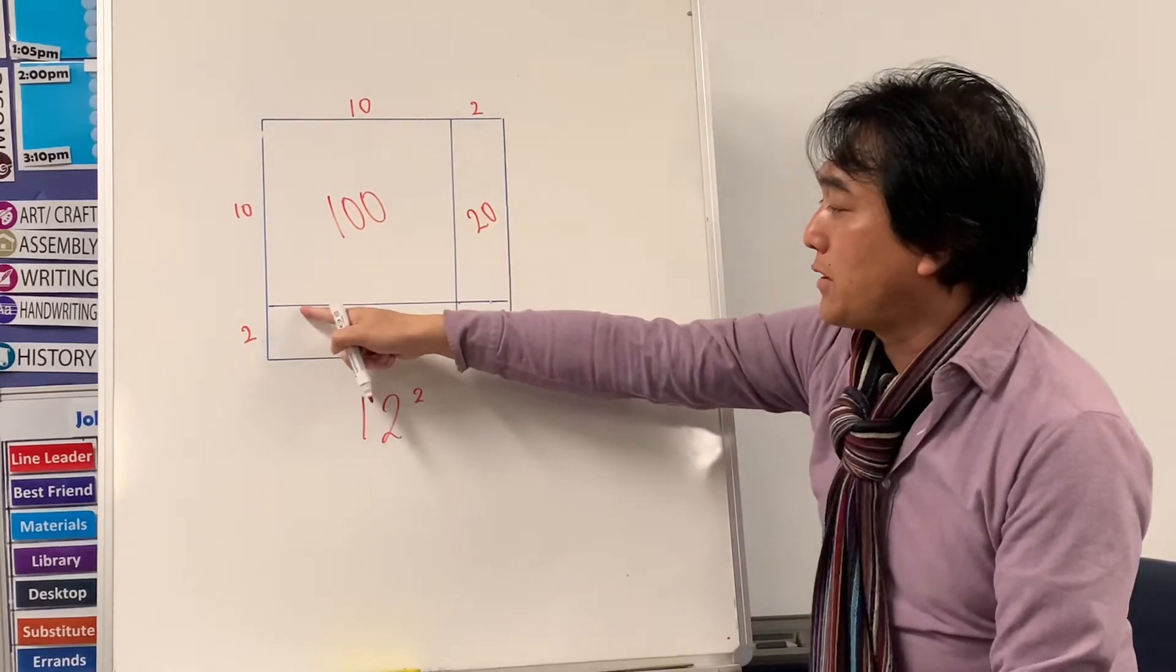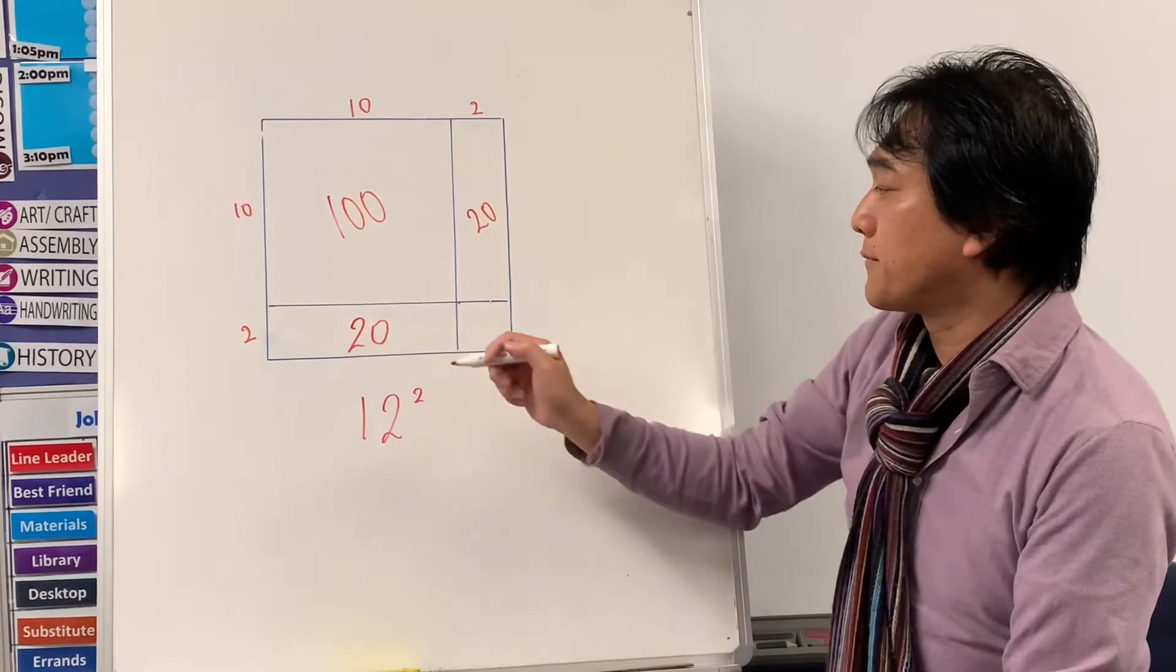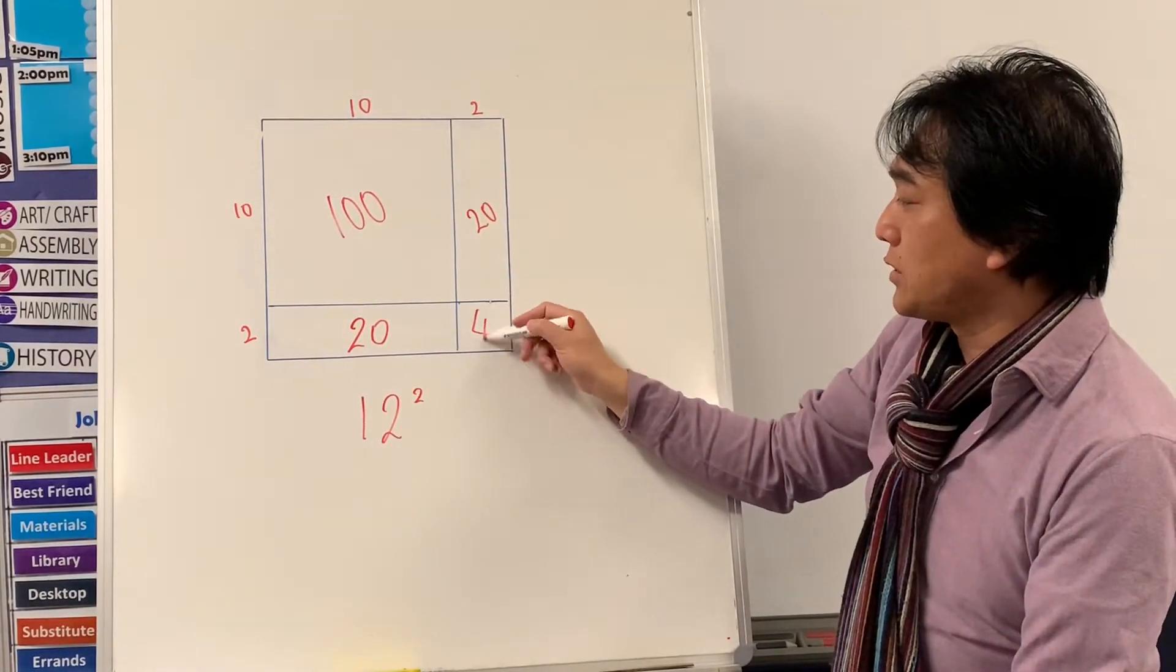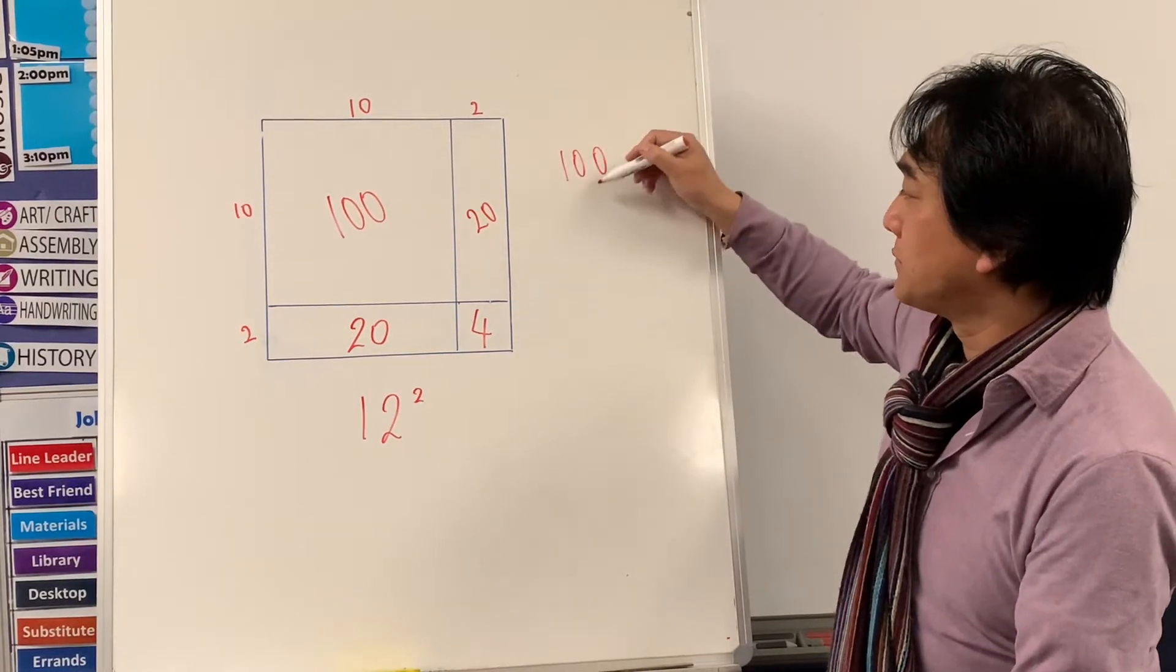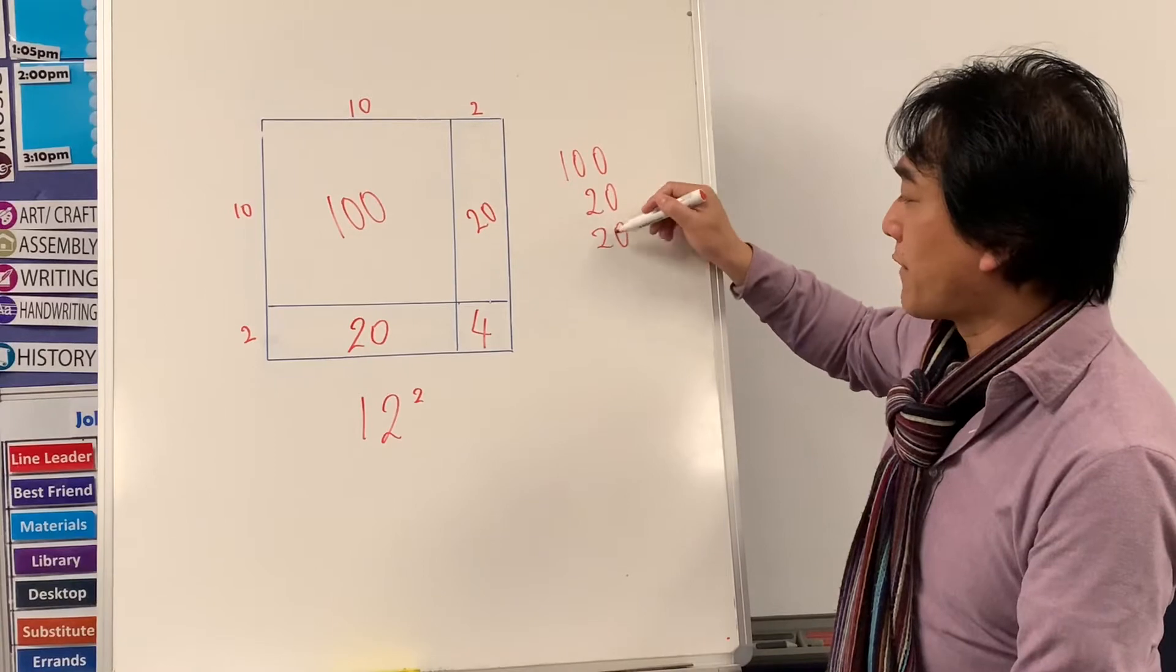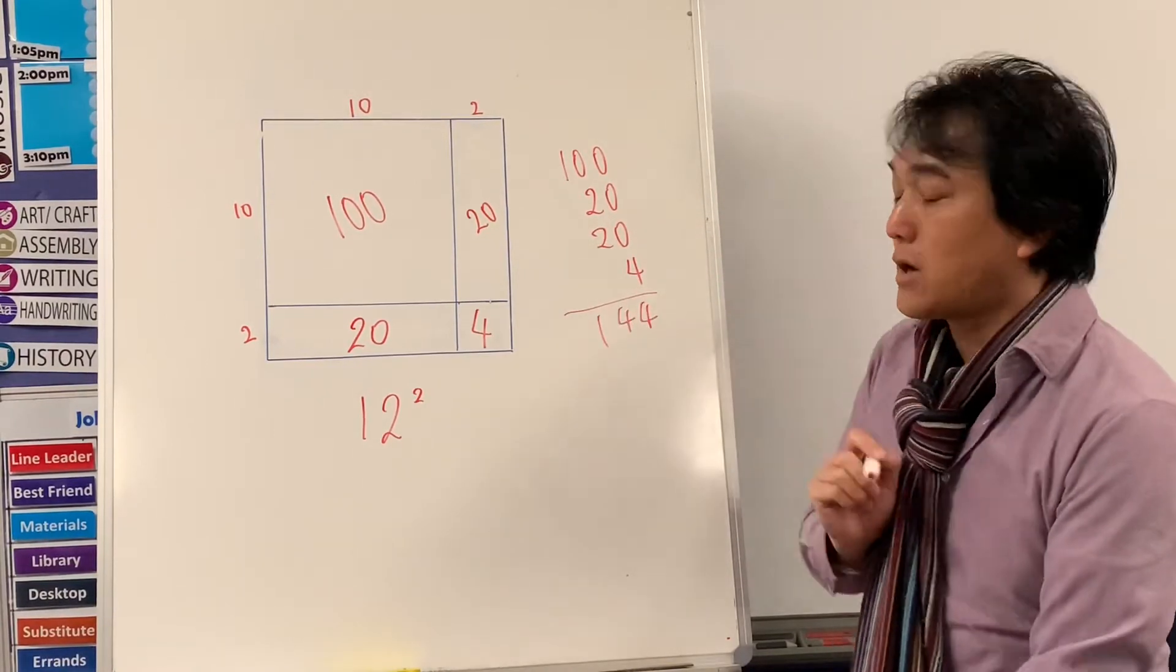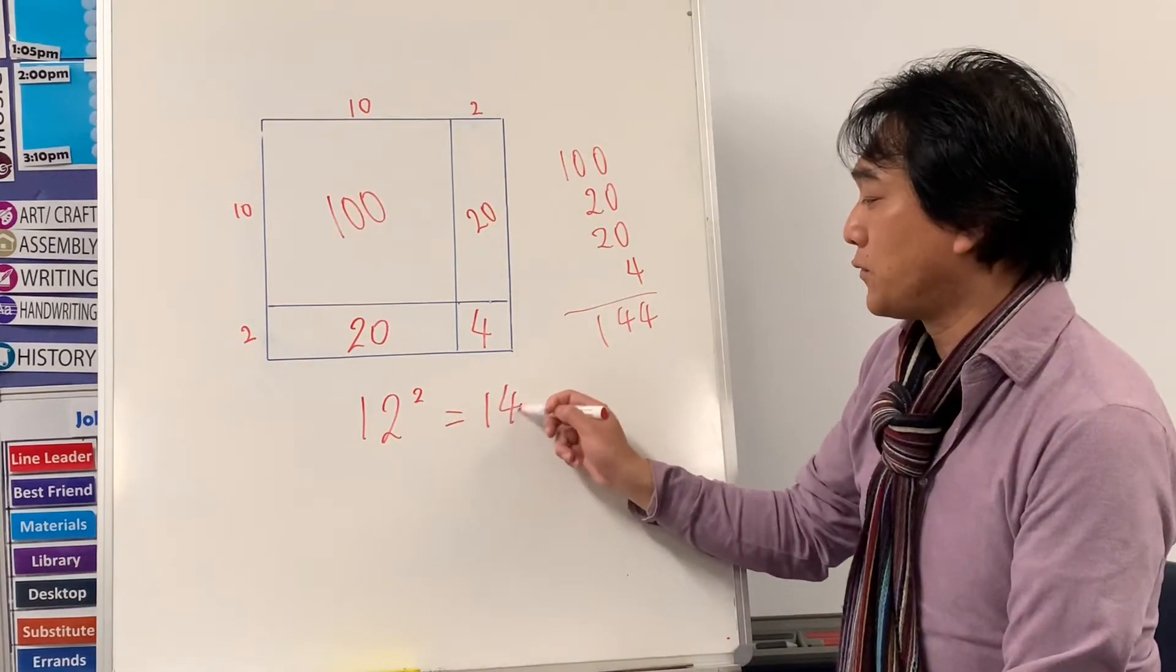In a little skinny box here, I have two dots and I have ten rows of them. So I have two times ten, which is twenty. Here, I have ten dots here, but two rows. So twenty again. Two rows of two dots. There are four dots in here. If we put them all together, I have one hundred and forty-four dots. So twelve times twelve is hundred and forty-four.